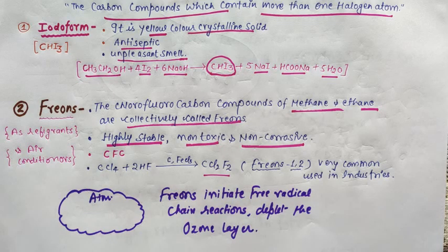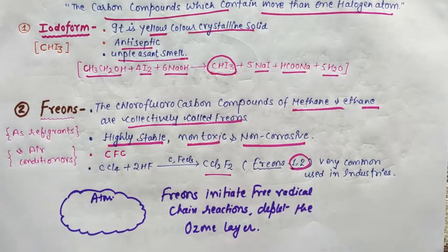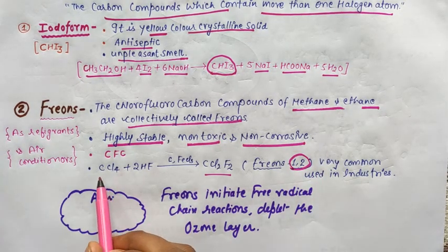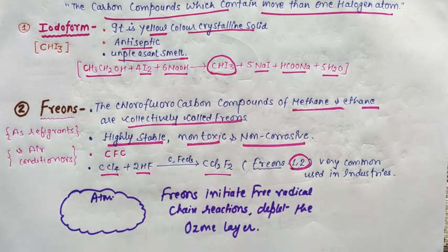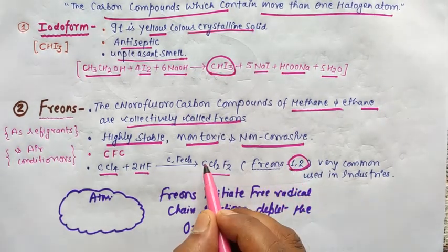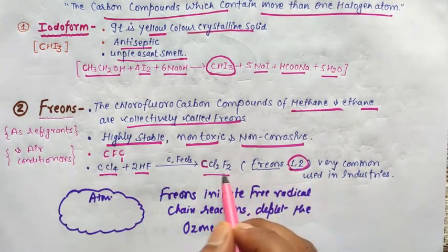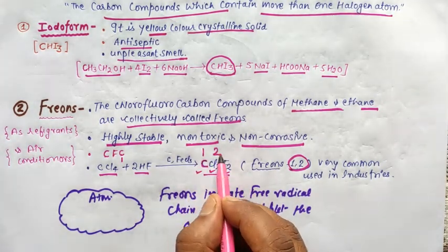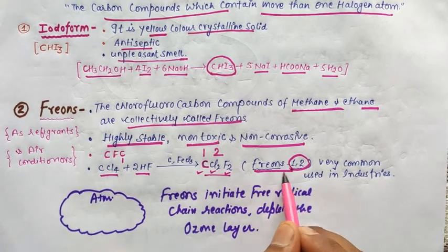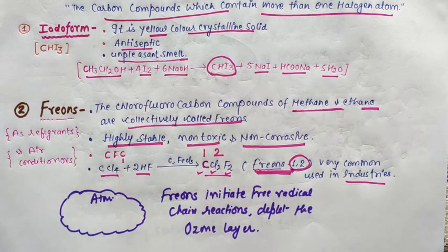CFC means chlorofluorocarbon - chlorine, fluorine, carbon. For example, CCl2F2, that is 2 chlorine, 2 fluorine, 1 carbon. This is called Freon-12. This is a very important compound, very common in industries.